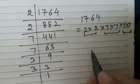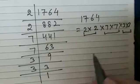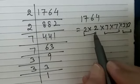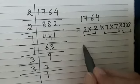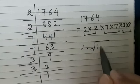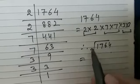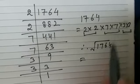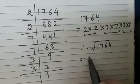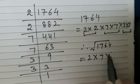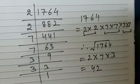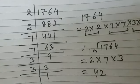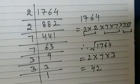Now make pairs of prime factors such that both factors in each pair are equal. Therefore, the square root of 1,764 is equal to — taking one from each pair and finding the product — 2 × 7 × 3, which is 42. I hope you have understood how to find the square root of a number using the prime factorization method.